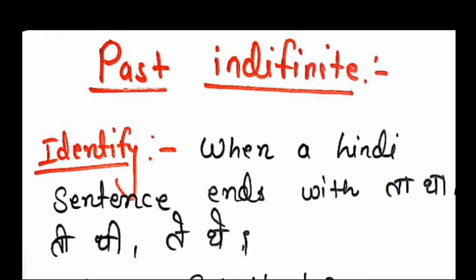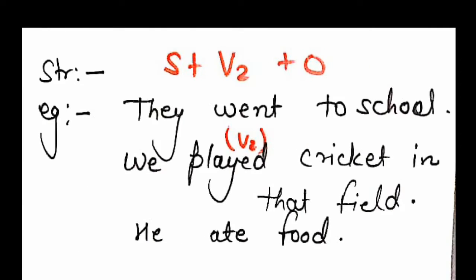Past Indefinite. Now we are going to talk about this sentence in English. The structure is: Subject + V2 + Object. For example, 'They went to school.' 'We played cricket in that field.'